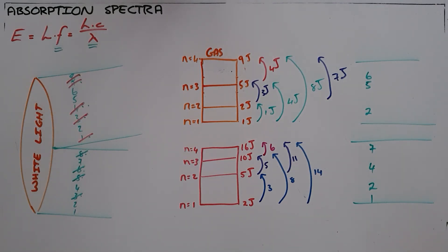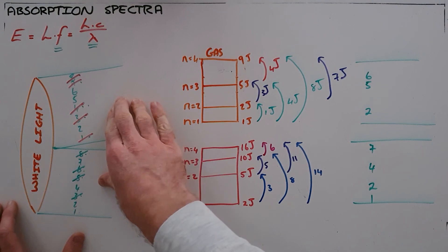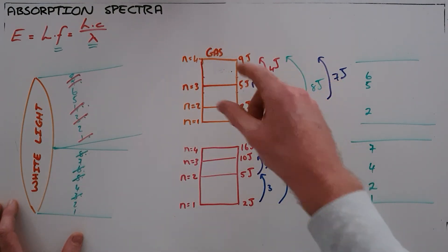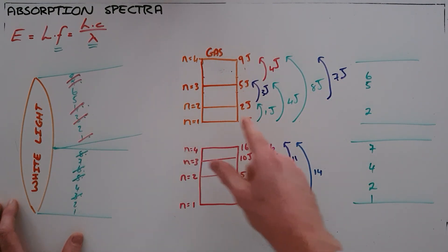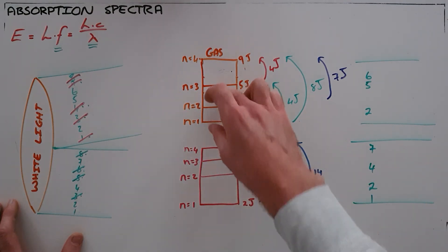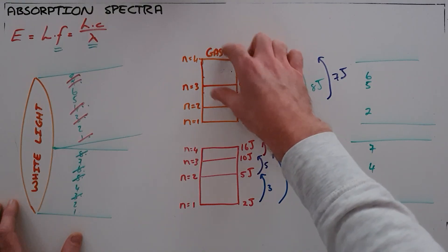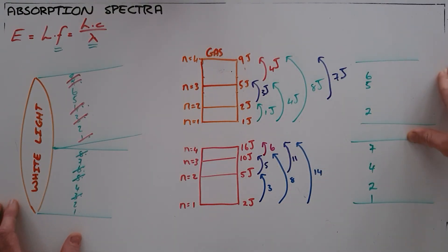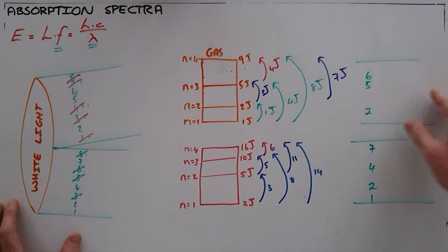To summarise: an absorption spectrum is formed when white light with a continuous spectrum is shone through a cold gas. That gas allows photons with energies matching specific energy level transitions to be absorbed, and the light coming out the other side is the absorption spectrum — only the necessary frequencies have been removed from that spectrum.